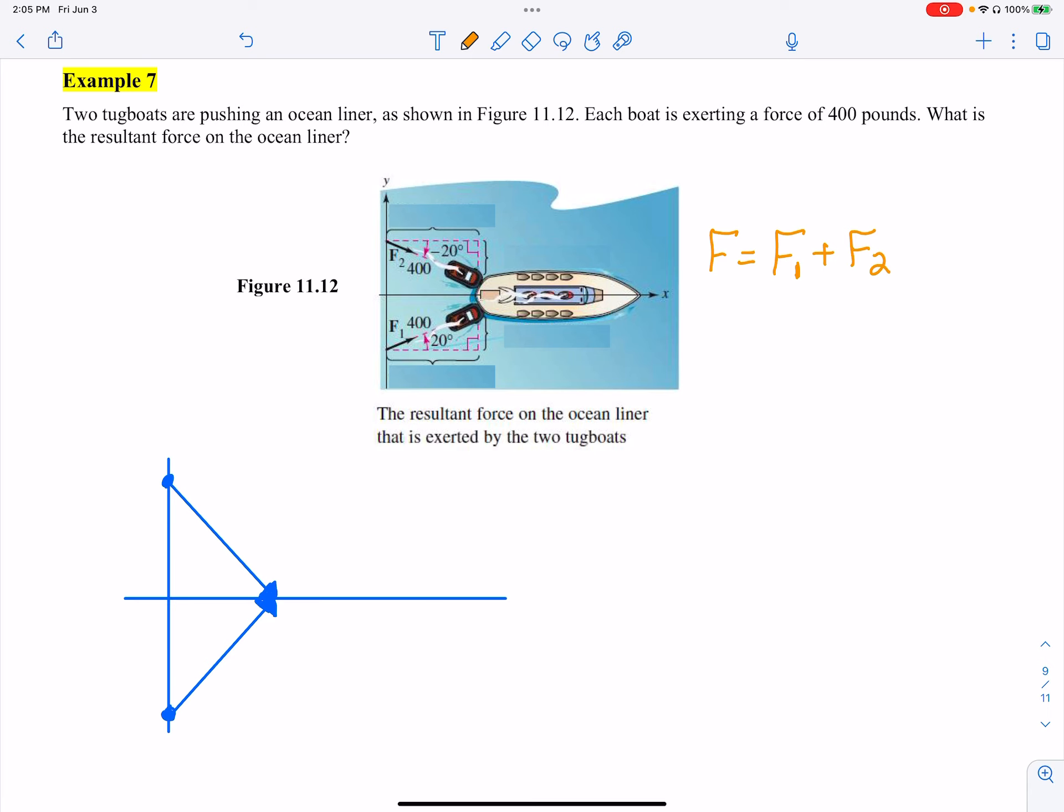So what I need to do is if I want to find the resultant force on this ocean liner, I need to find the component forces. What that means is like this F2 here, I want to know how much is it pushing it that way. Same thing here, I'd like to know how much I'm pushing it that way. And then we could also look like this one's pushing it down some, this one's pushing it up.